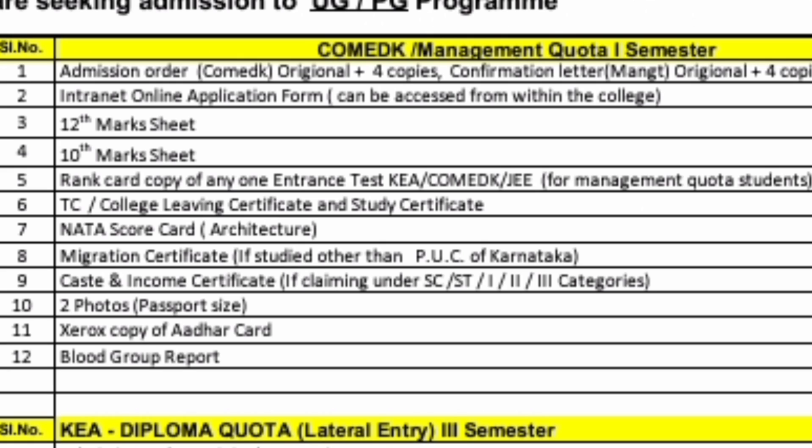Next is 12th marksheets and Xerox copies, 10th marksheets and Xerox copies, rank card of your COMEDK. If you are coming through management quota, bring your JEE rank card if applicable. TC transfer certificate for all Karnataka students who have written the COMEDK exam or are under management quota. NATA scorecard again for COMEDK architecture students. Migration certificate if the student studied PUC or class 12 from outside Karnataka. Caste and income certificate — this is not applicable for COMEDK students as there is no reservation category. Two passport-size photos, Xerox copy of Aadhar card, and blood group report — those are the documents required for COMEDK students.